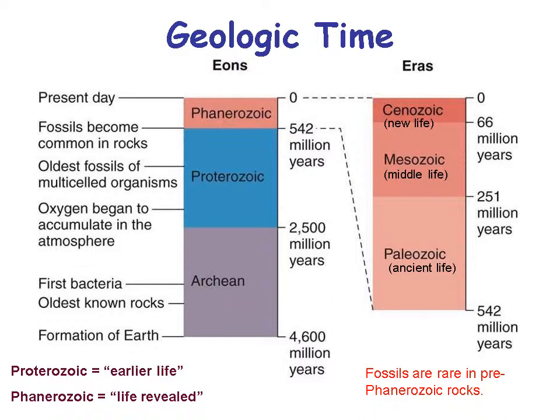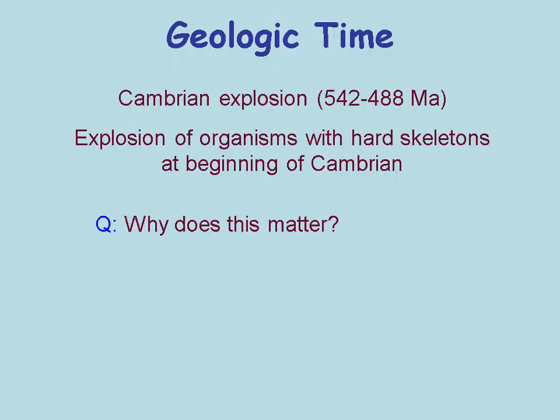But before that, in the Archean eon, we did have life. It was bacteria, and one of the things God did during that time was put types of life on Earth that would help build oxygen and help create a breathable atmosphere. The Proterozoic is earlier life, and the Phanerozoic is life revealed.